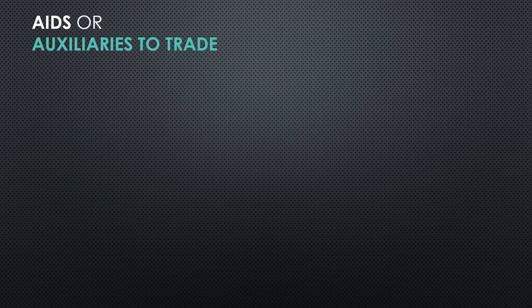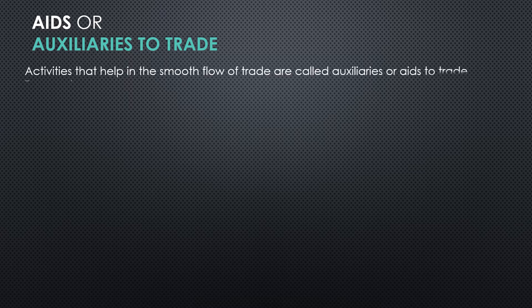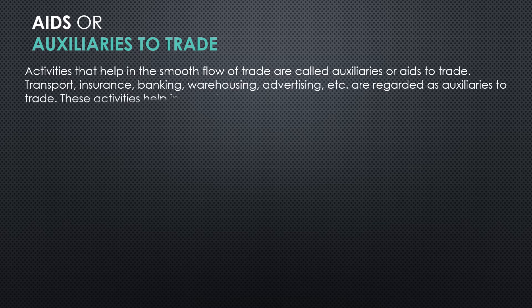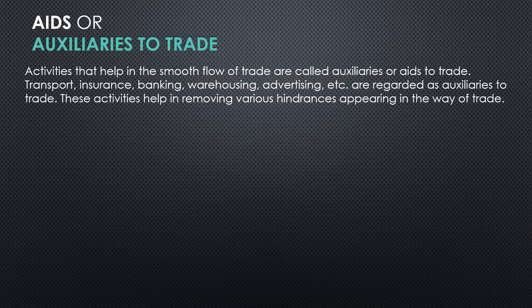We are going to start this session with aids or auxiliaries to trade. This is one more category under commerce — the first one being trade, which has already been explained in the previous video. What are aids or auxiliaries to trade? Activities which help in smooth flow of trade are called auxiliaries or aids to trade. Transport, insurance, banking, warehousing, advertising, etc. are regarded as auxiliaries to trade.